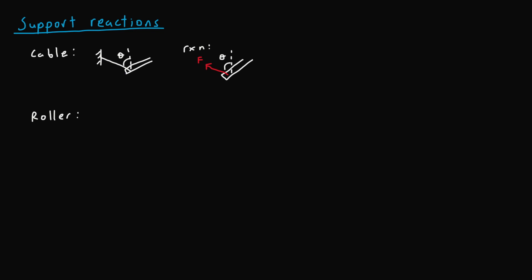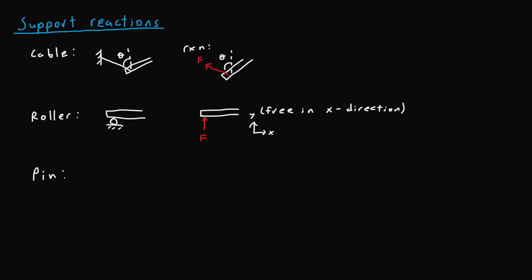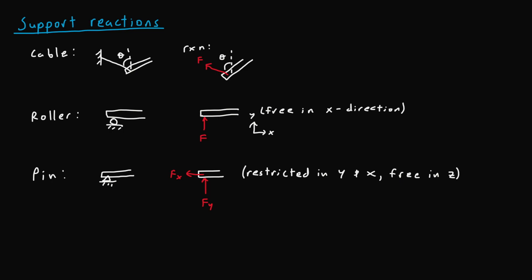Taking a look at a roller support: the reaction is simply a vertical force on the beam, since the body can freely move along the horizontal x direction, following a coplanar x and y coordinate system. Next we have the pin support, represented by a simple triangle. The reaction for a pin is similar to that of a roller, except we also add a force along the x direction, since the body is no longer able to move in the x direction. It is restricted in x and y, while it is free to rotate about the z direction in a 3D coordinate system.